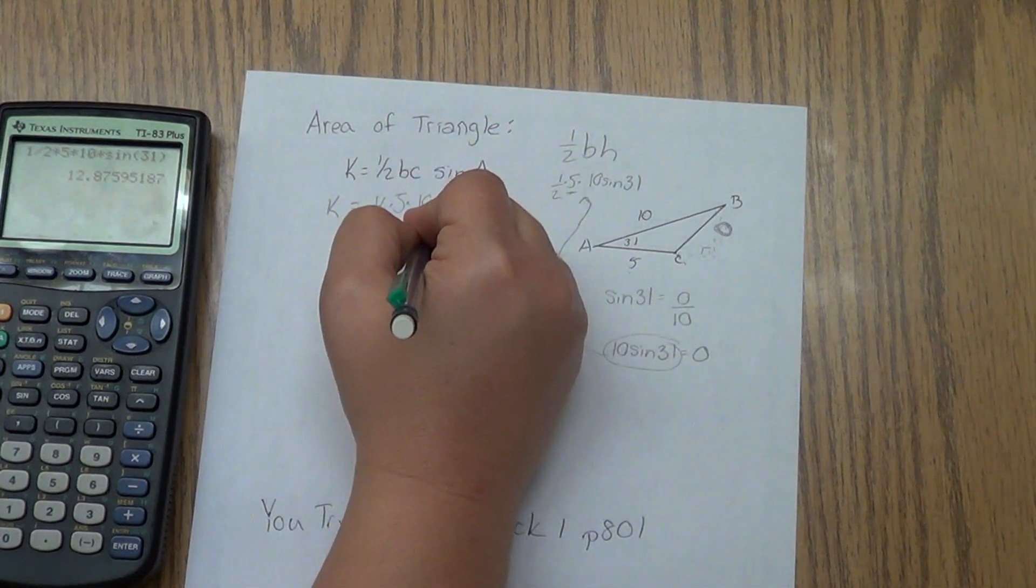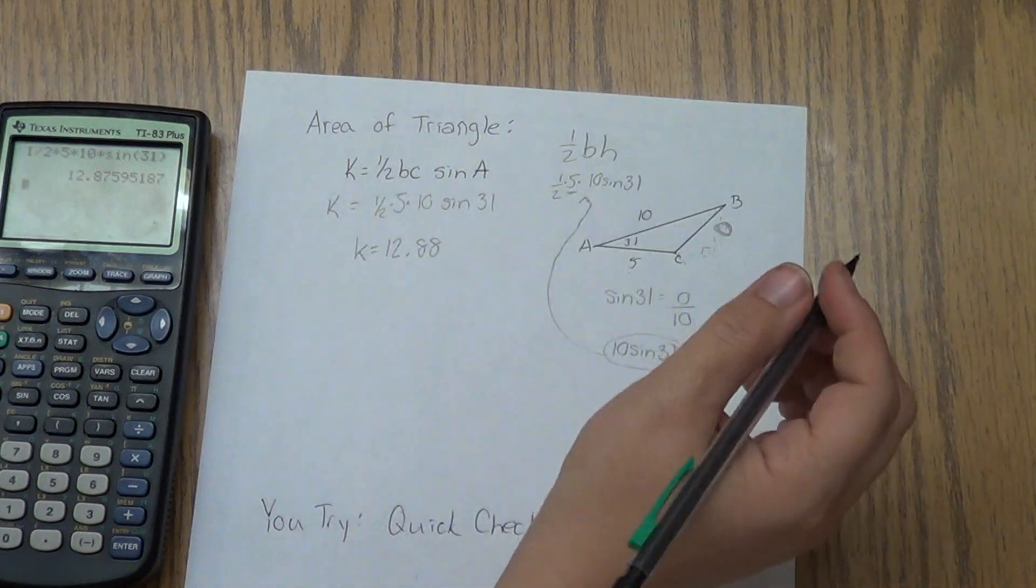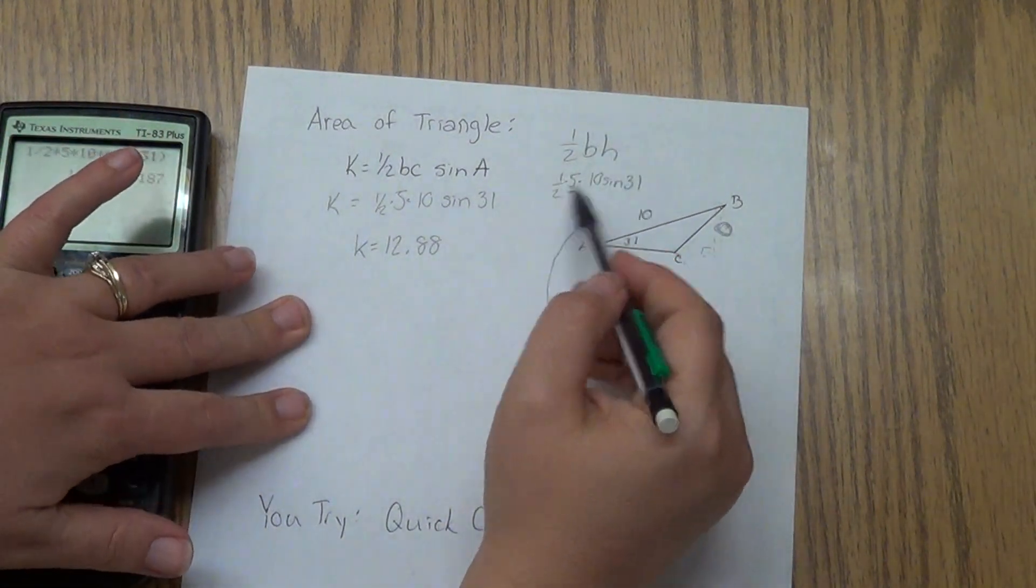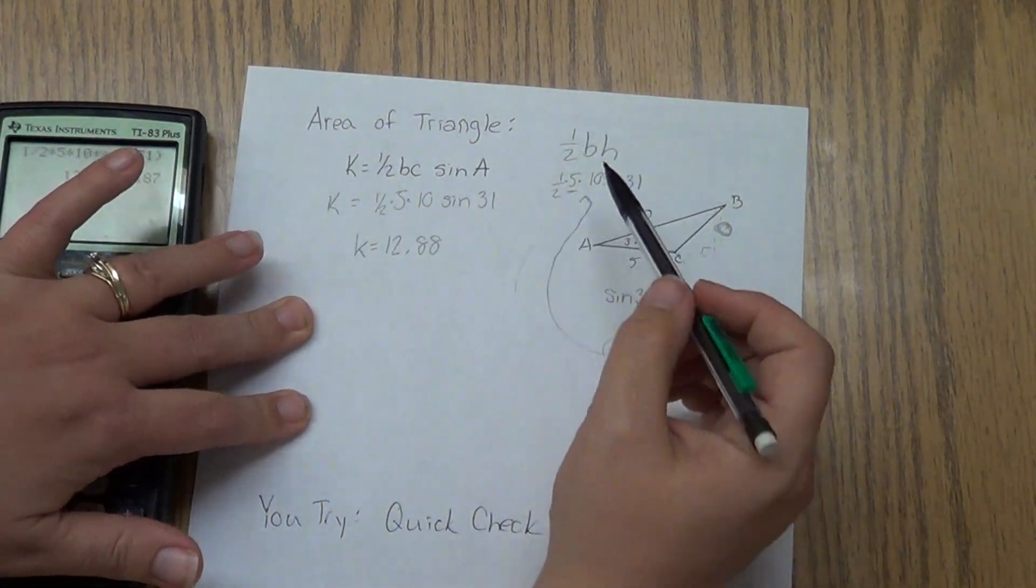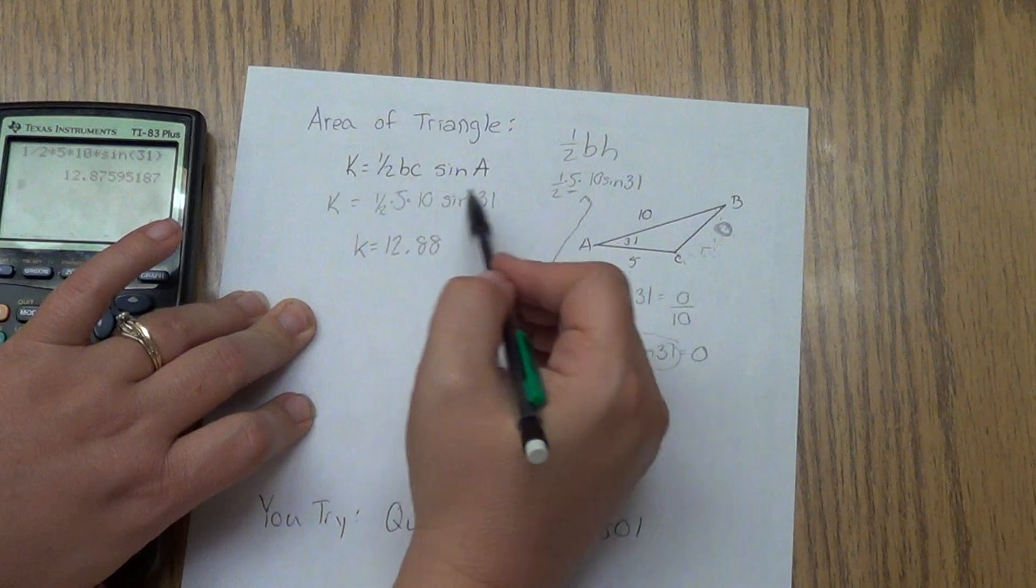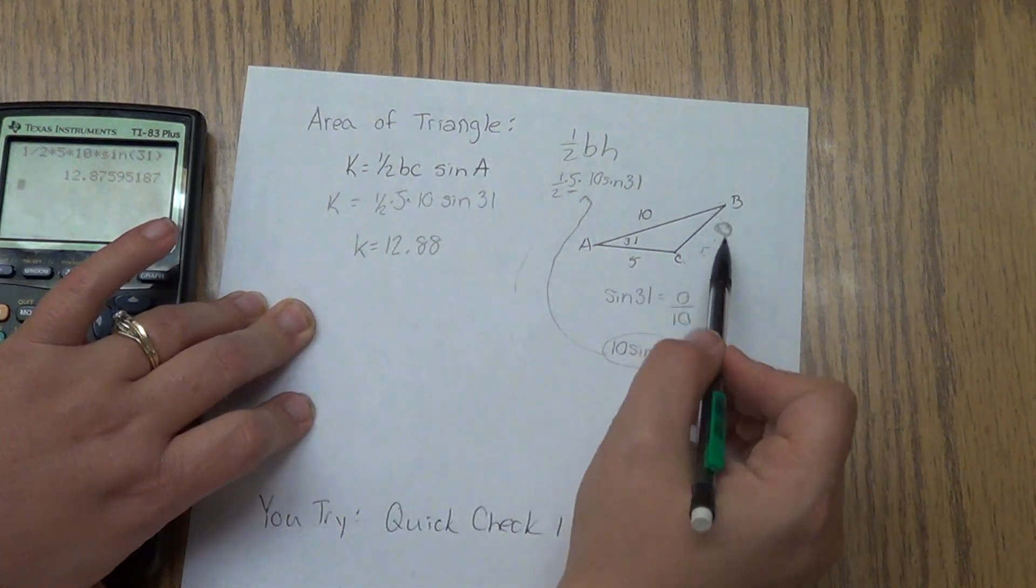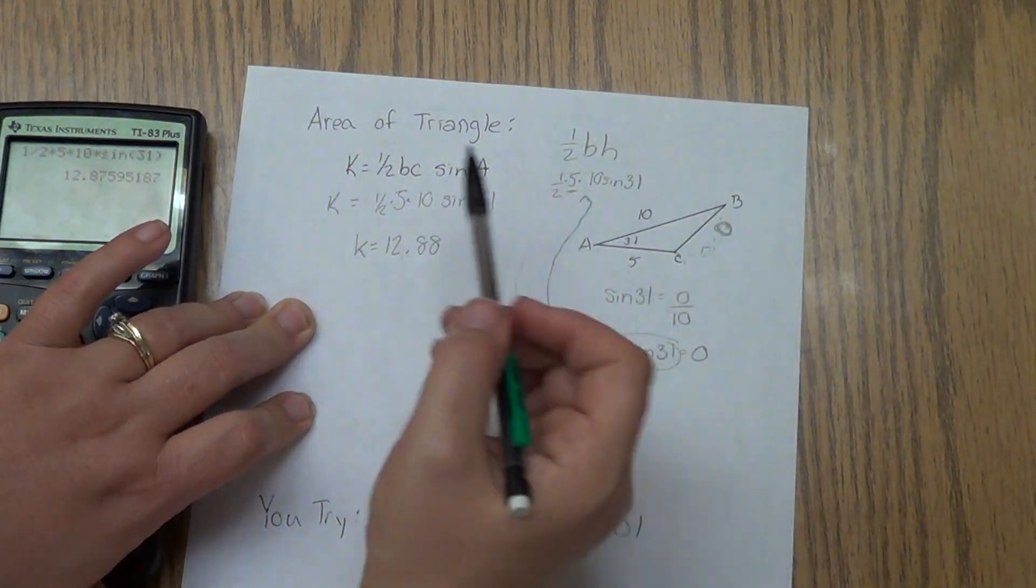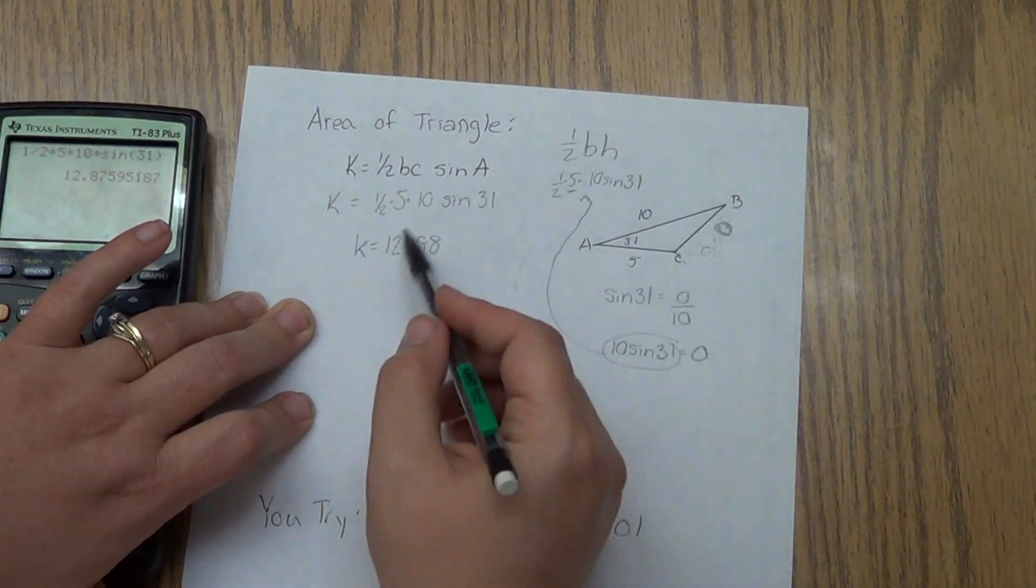So K equals 12.88. So our area is approximately 12.88. So again, will you have to do all of this on a regular basis? No. But the point is, if you forget this formula, you could figure it out without this formula. Because it's just one more formula to memorize. But if you know the formula, life is really easy.